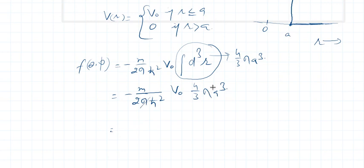3ℏ². Therefore differential cross section, that is dσ/dΩ, is equal to square of the scattering amplitude.